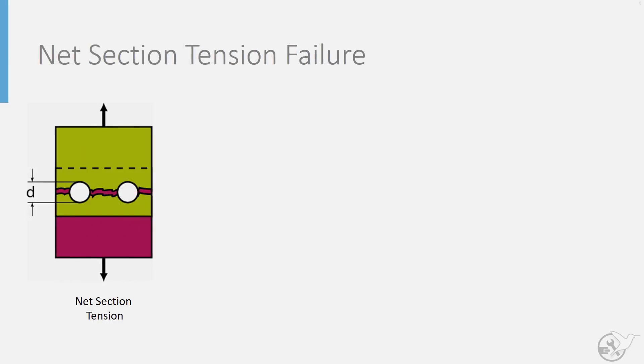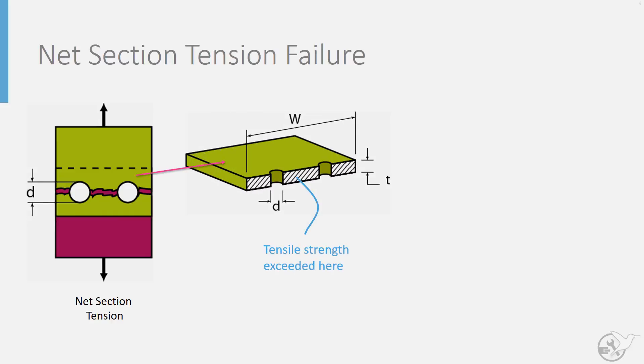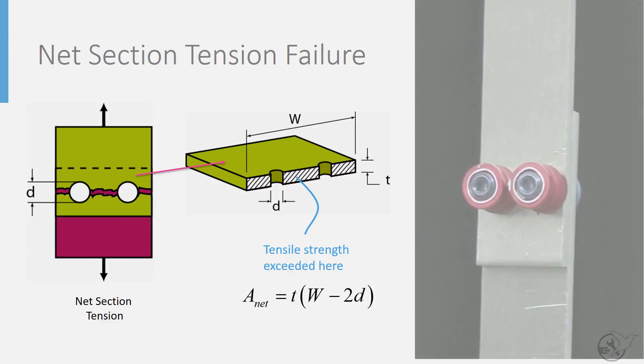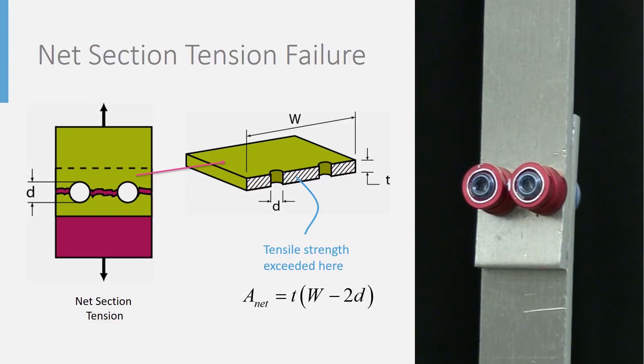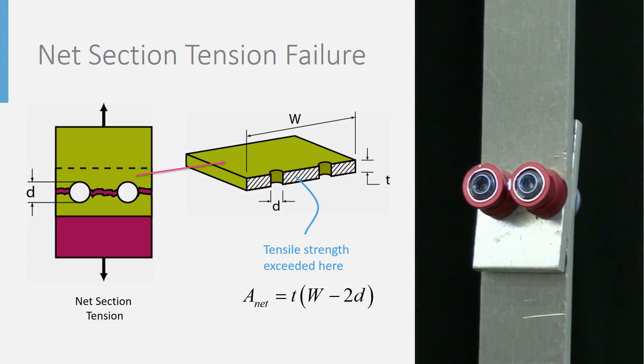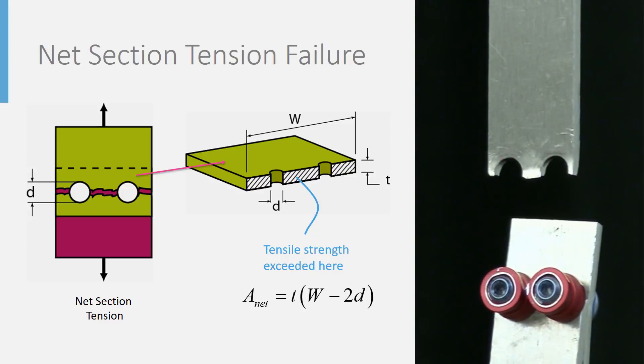The first of the sheet failure modes we will look at is net section tension. This failure mode is a consequence of the tensile strength of the sheet being reduced by the row of holes drilled into it. The remaining cross-sectional area of sheet along these rows, or net section, is smaller than that of the total cross-sectional area of the sheet, but has to carry the same overall load. As a result, this net section region can fail earlier than the rest of the structure.